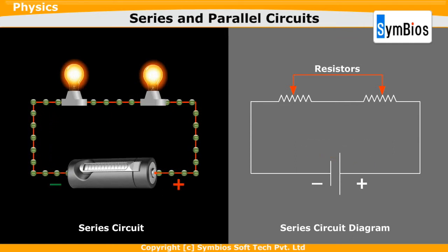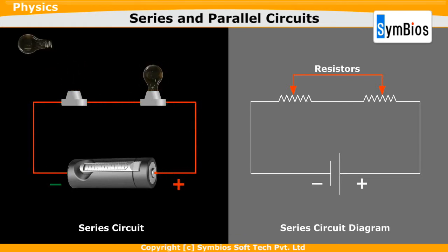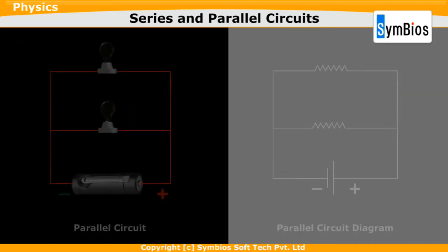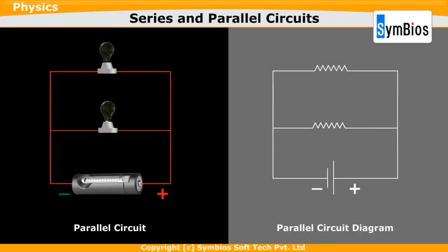In a series circuit, if one bulb is removed, the circuit becomes open. The flow of current stops and the other bulbs also go off. A parallel circuit is a circuit in which the resistors are connected sideways. The current in a parallel circuit breaks up, with some flowing along each parallel branch and recombining when the branches meet again.